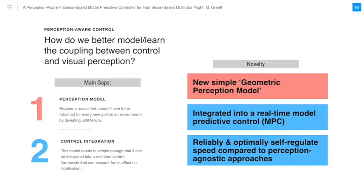We show how our approach reliably and optimally self-regulates speed compared to perception agnostic approaches.